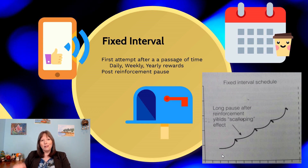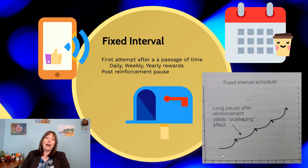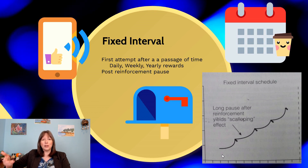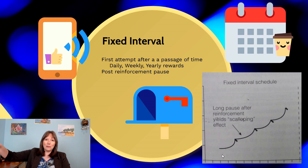The fixed interval graph looks different from ratio graphs — it's a scalloped graph with a dip down. That's because once we understand it's a fixed interval pattern — every day, every two hours, every 30 minutes — we learn to pause after receiving reinforcement since we know another won't come for a while. After you check your mail at 1 p.m. and it's there, you won't check again at 2 p.m. But if it's not there at 1 p.m., you might check again at 1:30, 2:00, and 3:00.